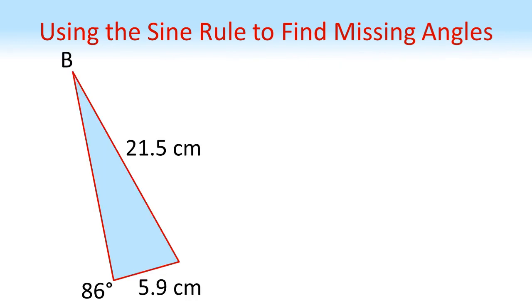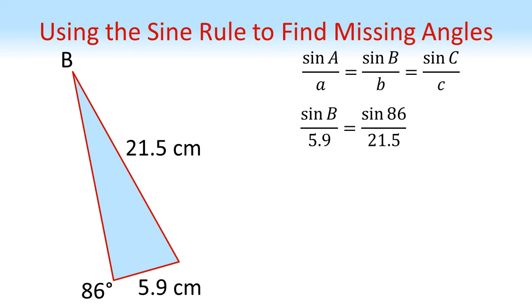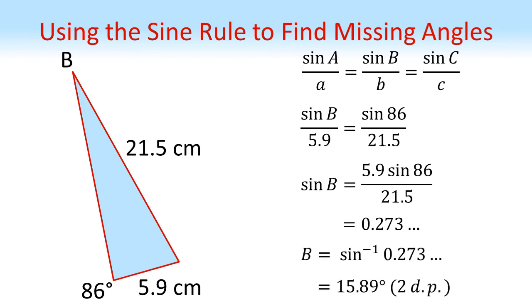Let's try again with this example. So here's our triangle. We've got the pairs of angle and sides which are opposite each other. So sine A over a equals sine B over b equals sine C over c. Putting our values in gives us that sine B over 5.9 is equal to sine 86 over 21.5. Multiplying both sides by 5.9 gives us that sine B equals 0.273. And taking the inverse sine of both sides gives us that B is equal to 15.89 degrees to two decimal places.